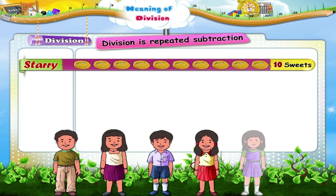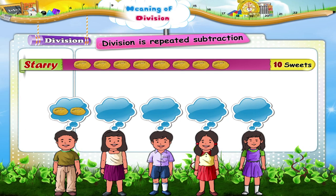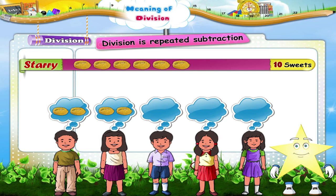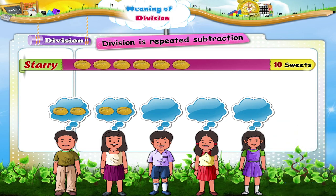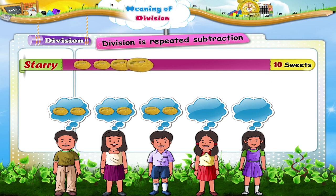The first time we take away a group of two sweets from the ten — eight sweets remain. Next we take away another group of two sweets from the remaining eight — six sweets are left. When we take away another group of two sweets from the remaining six, we have four sweets left.